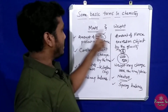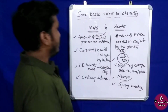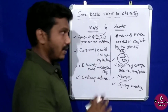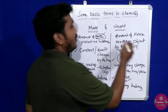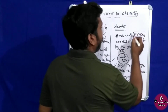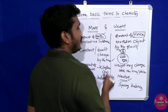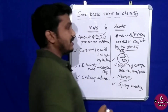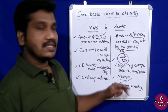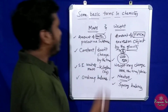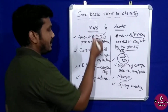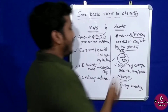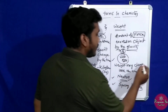So this is the difference between mass and weight. Amount of matter present in a substance is nothing but mass. Amount of force exerted by gravity is nothing but weight. Mass is constant and does not change, but weight is changing.